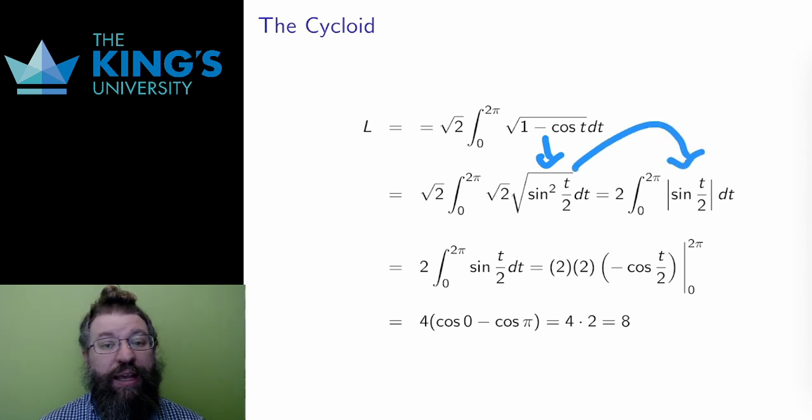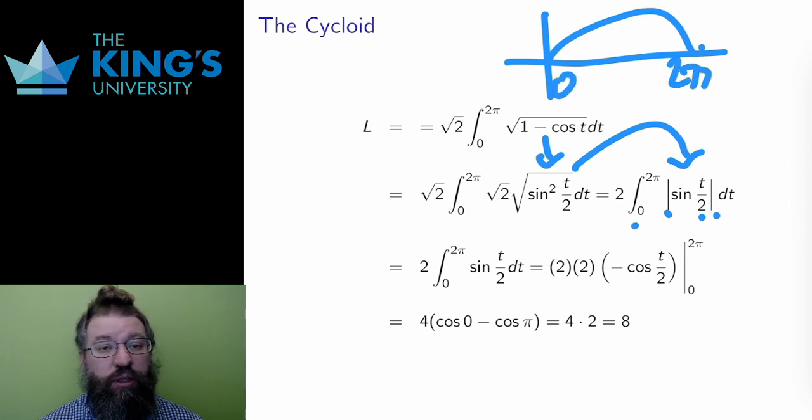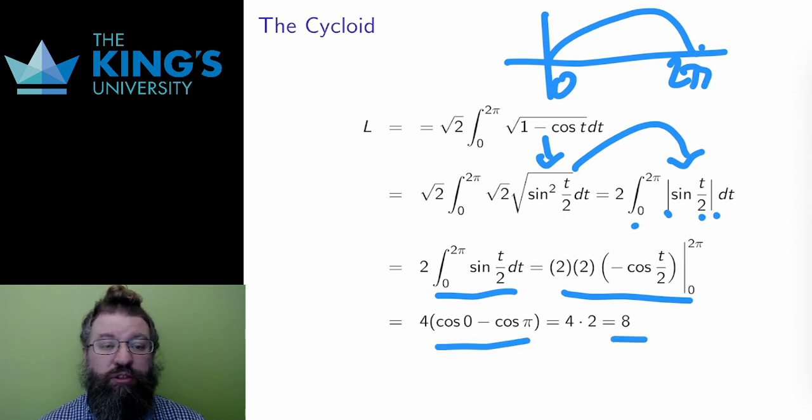However, since the angle is t over 2, as the angle goes from 0 to 2π, the input from sine is only from 0 to π, and sine is always positive on this range. So I can drop the absolute value and then just finish the integral. The result is 8. The length of one arc of the cycloid based on the circle of radius one is 8 units of distance.